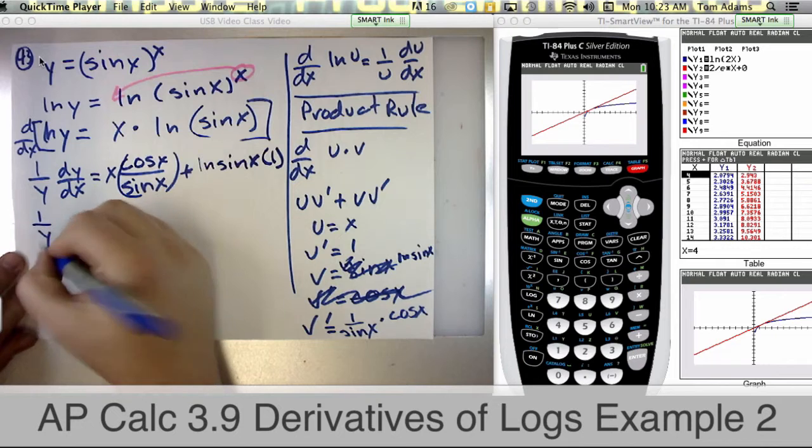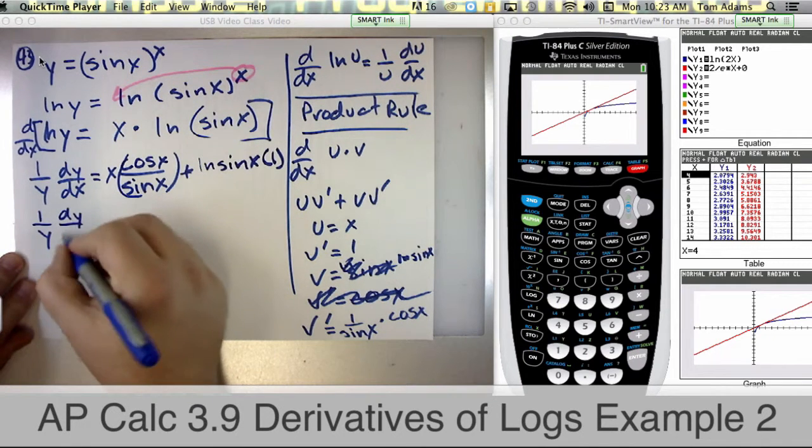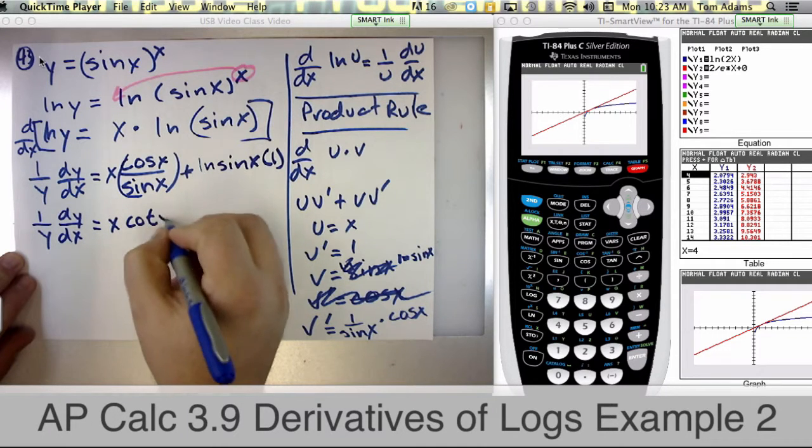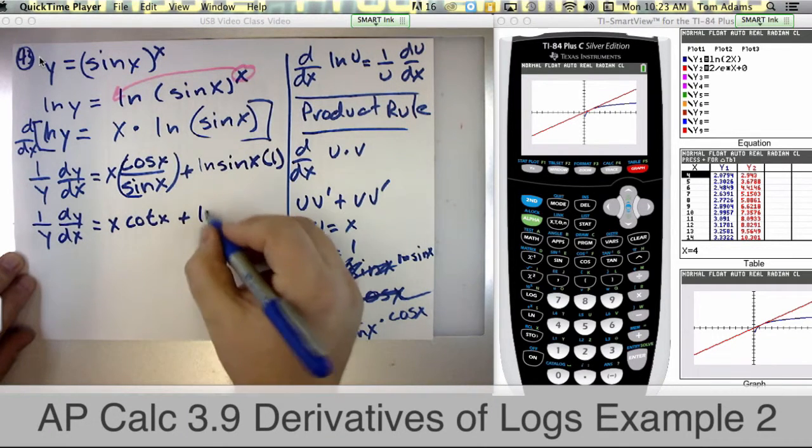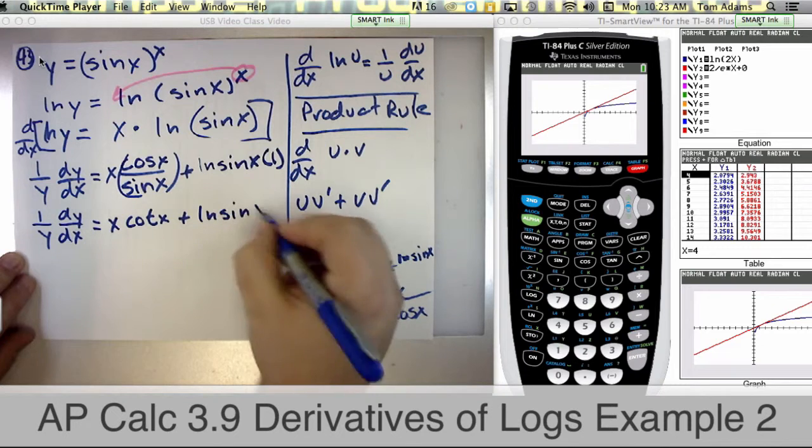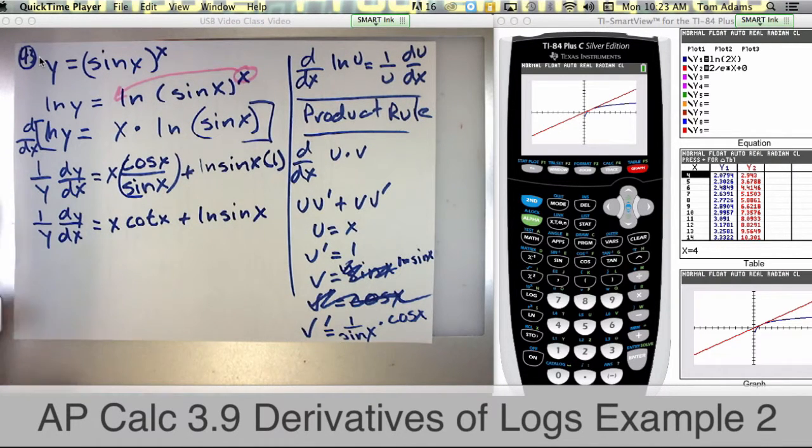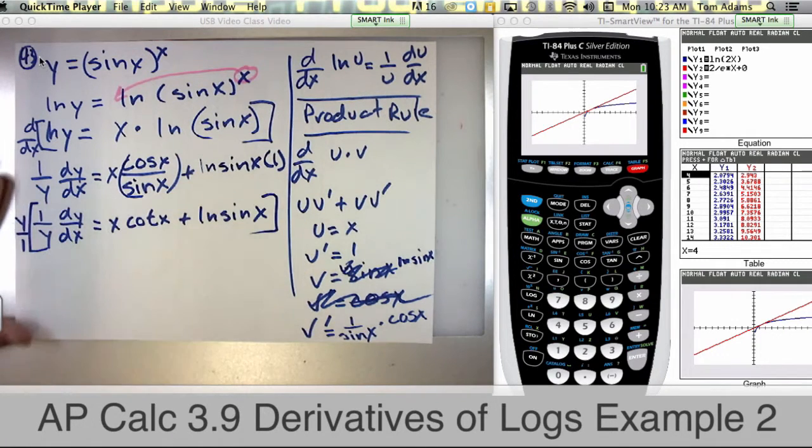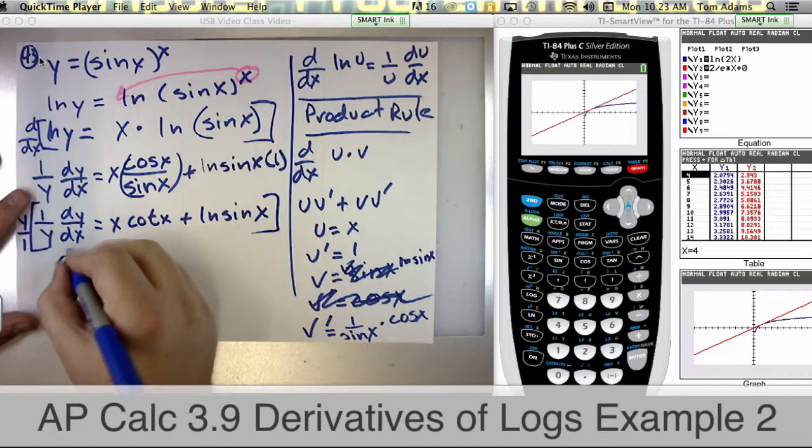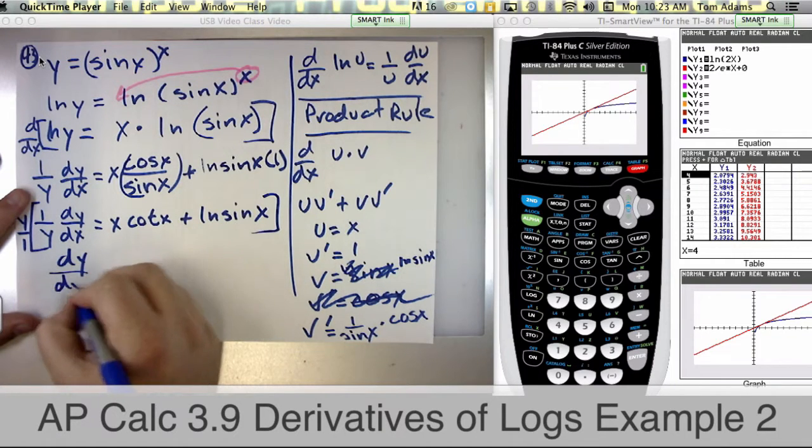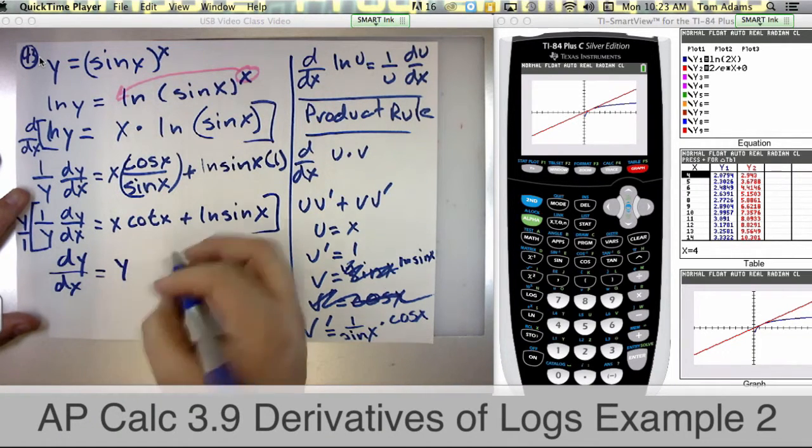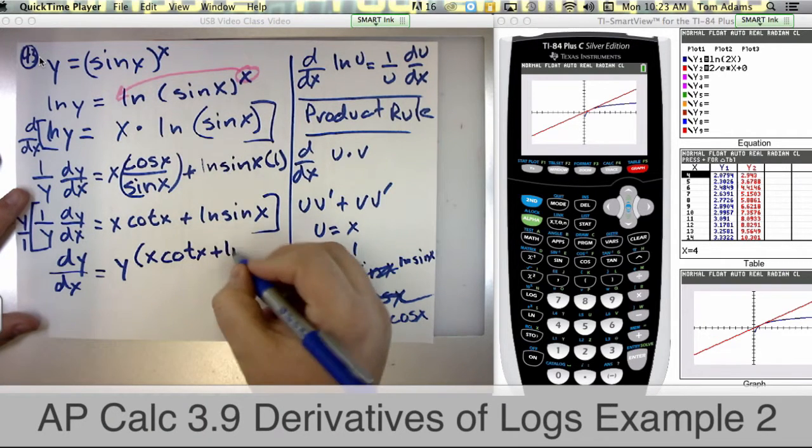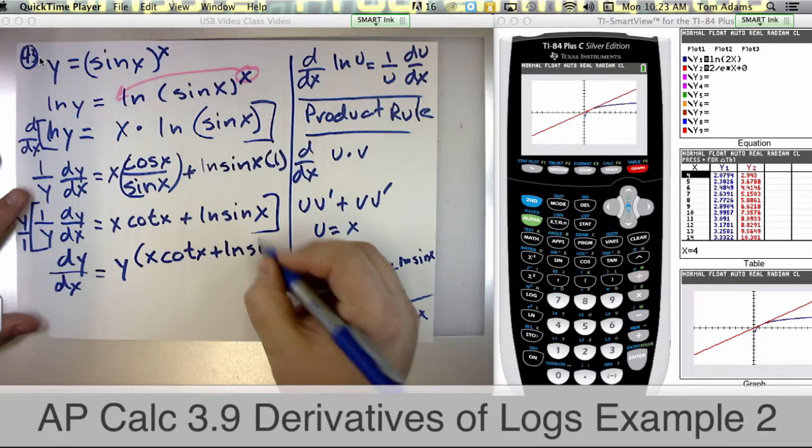So I've got 1 over y dy dx is equal to x cotangent of x plus the natural log of sine of x, right? Well we want to find y prime or dy dx so I'm just going to get this by itself by multiplying everything by y over 1. That'll cancel with this term in the front so I get dy dx is equal to y times x times cotangent of x plus the natural log of sine of x.